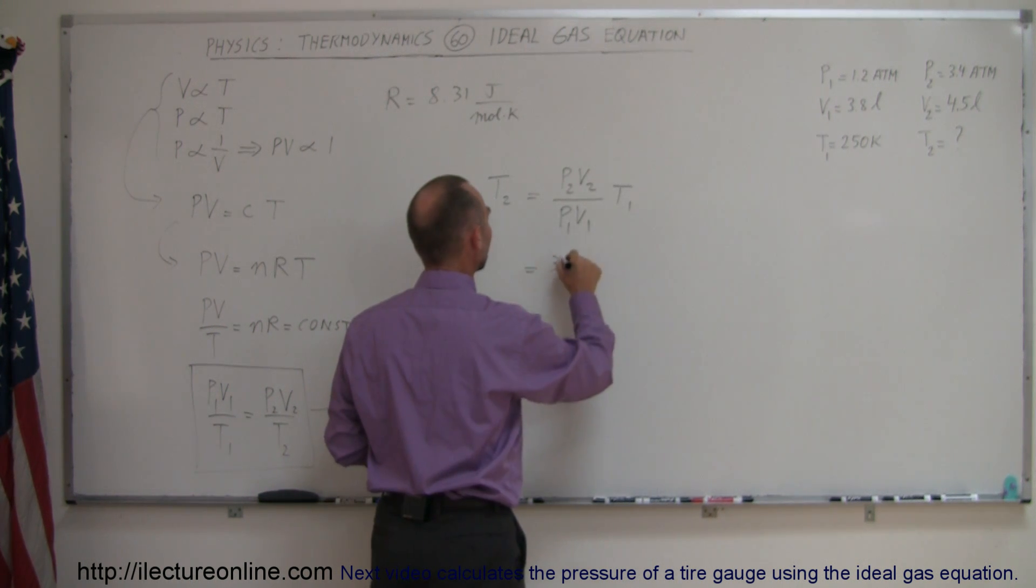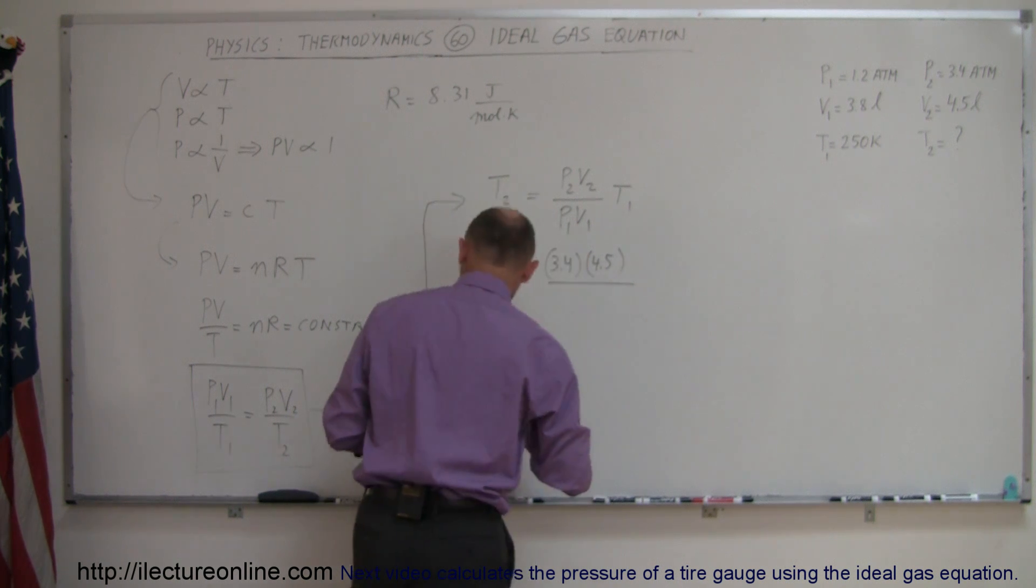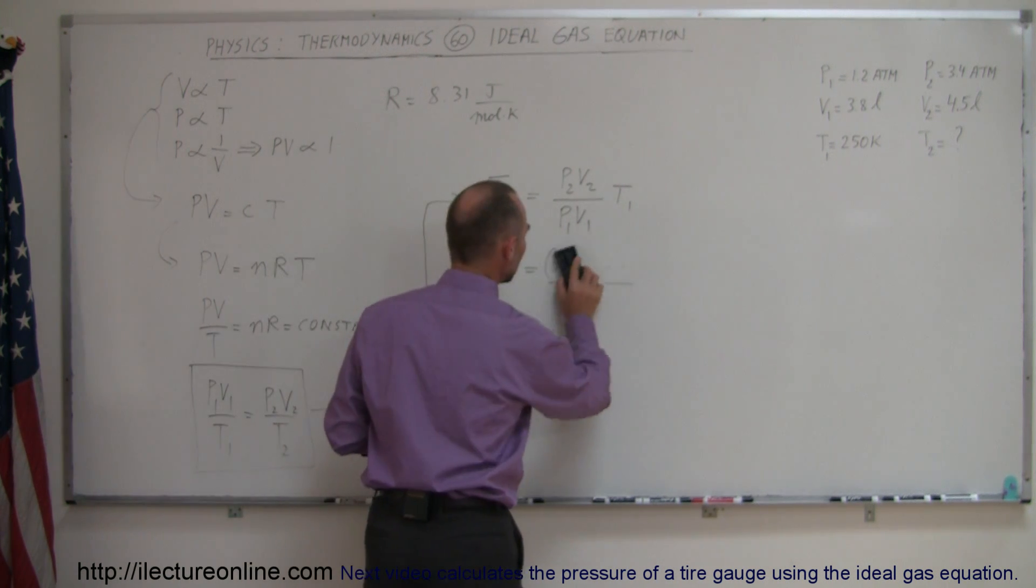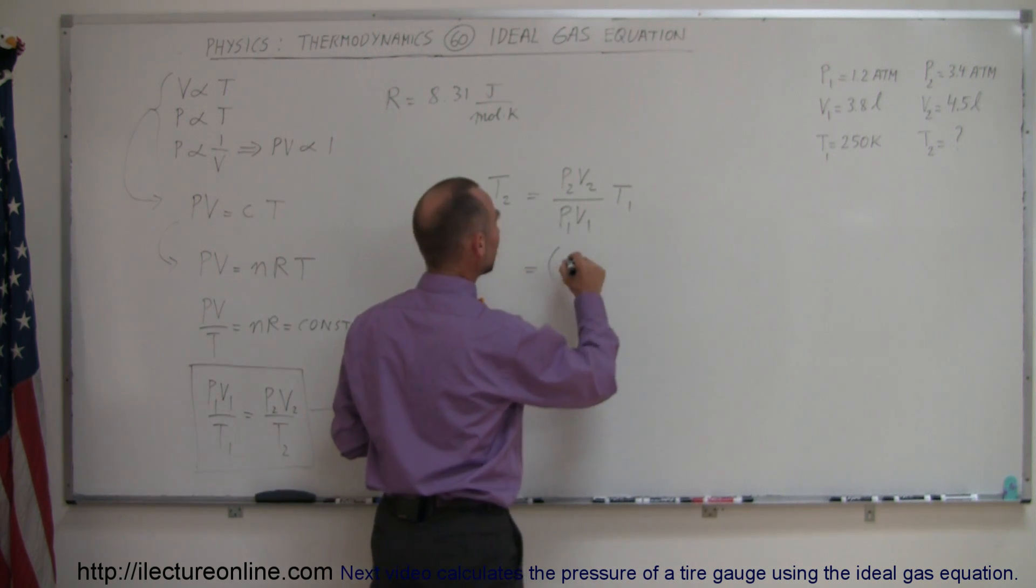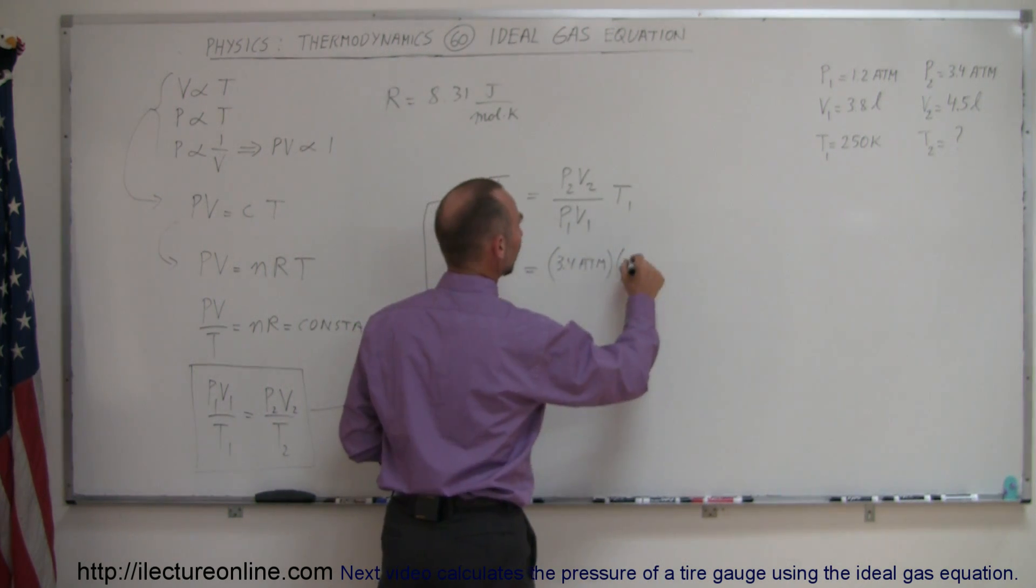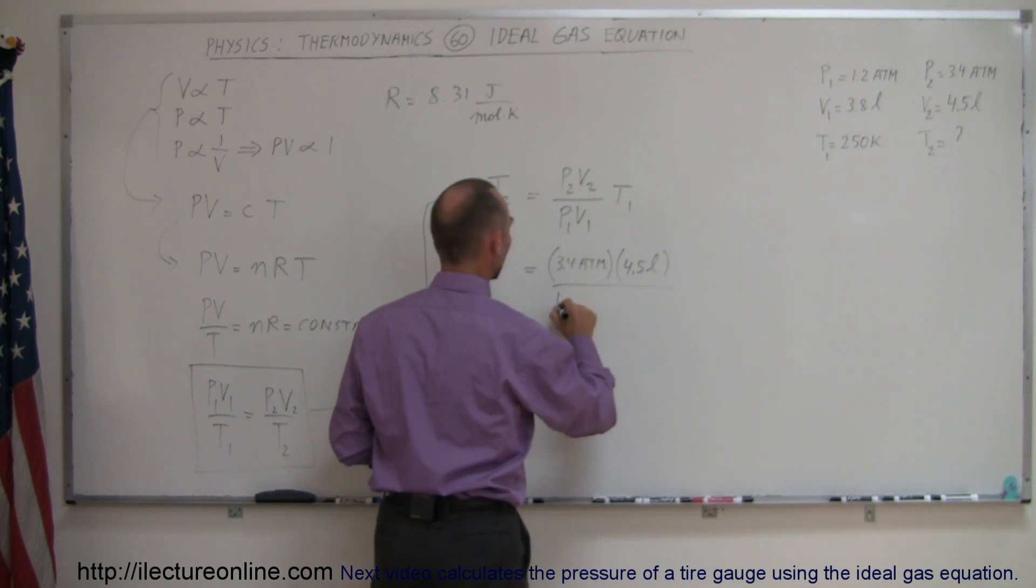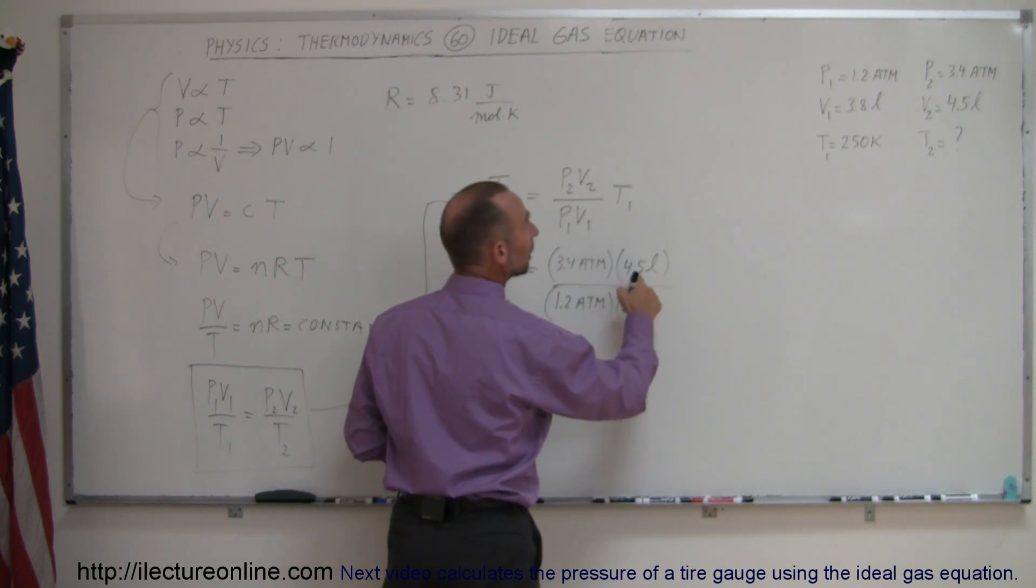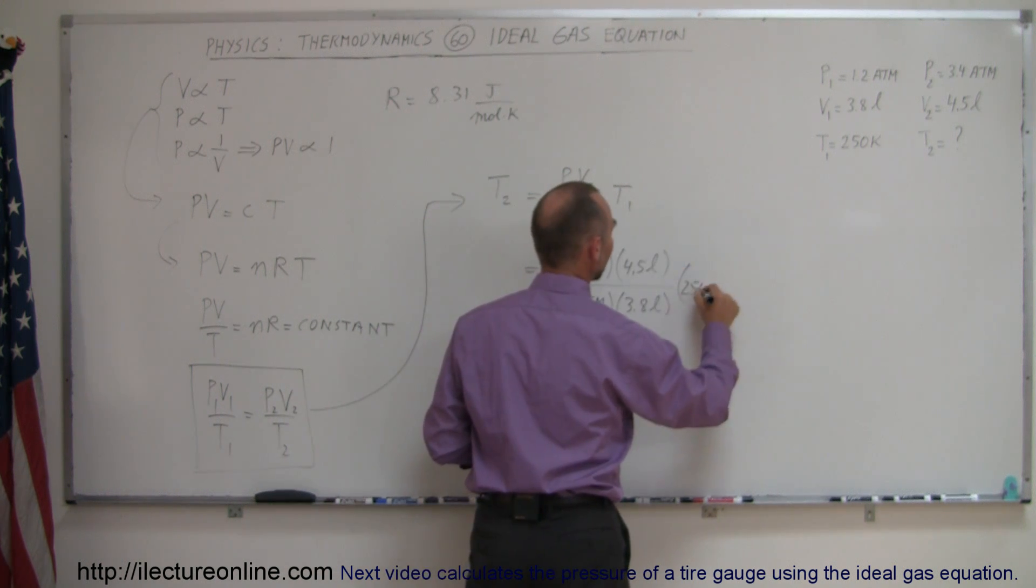So let's plug in the numbers. P2 would be 3.4 atmospheres. Volume 2 would be 4.5 liters, divided by pressure 1, which would be 1.2 atmospheres. And volume 1 would be 3.8 liters. And then finally here, for temperature 1, we put 250 Kelvin.